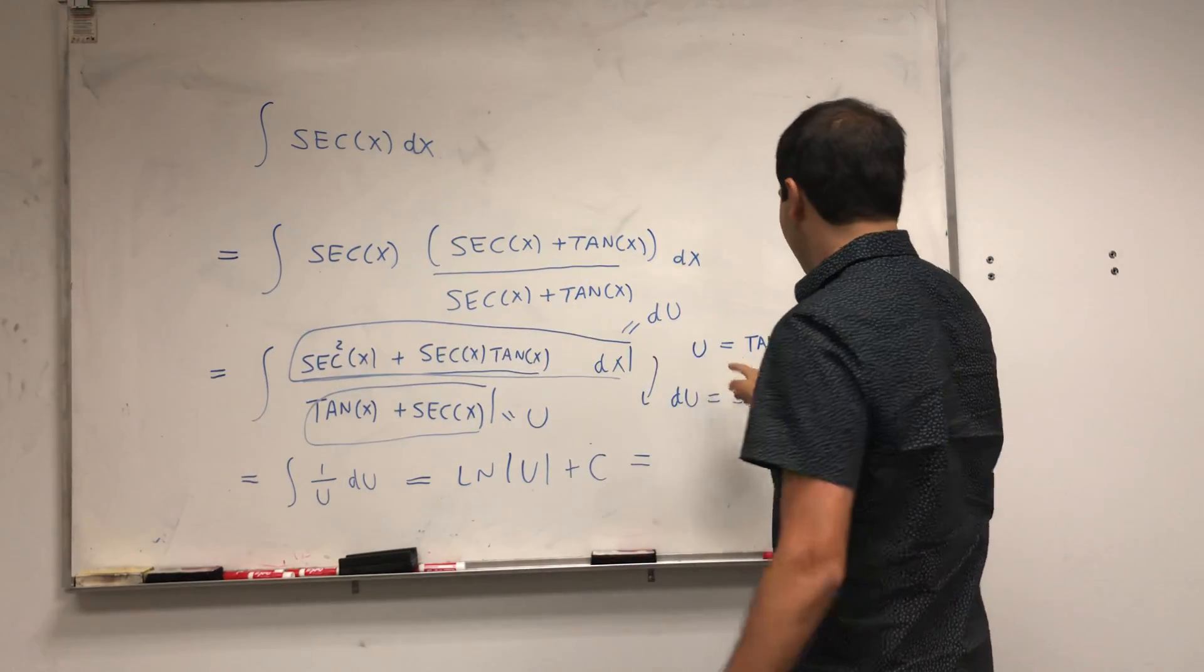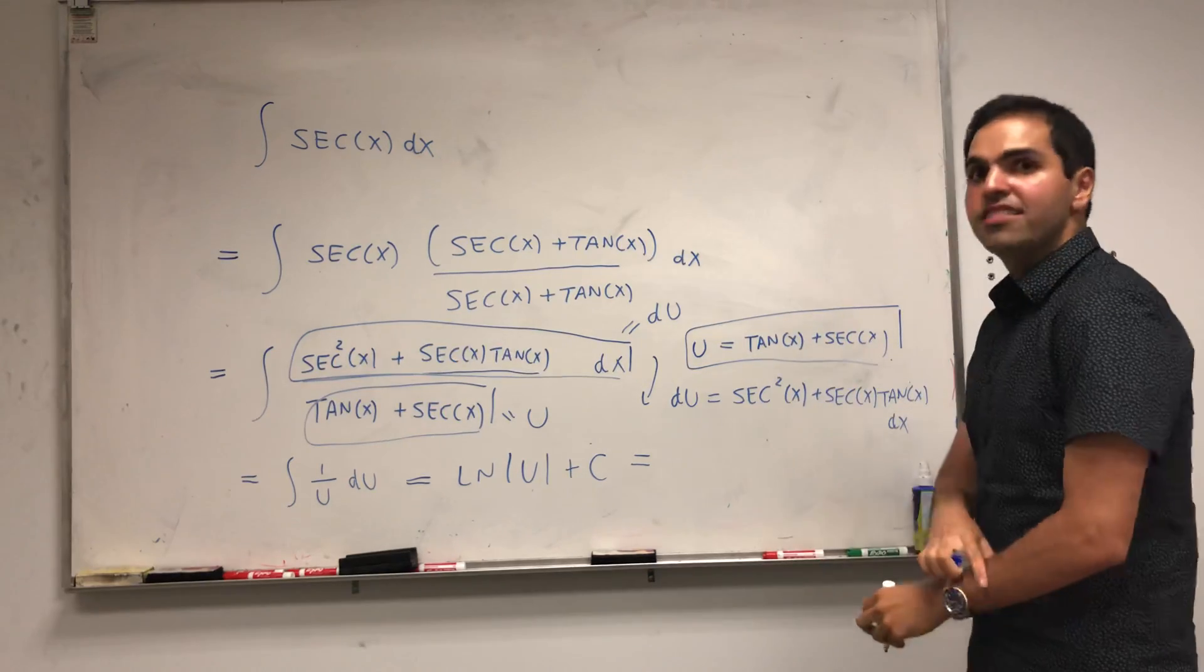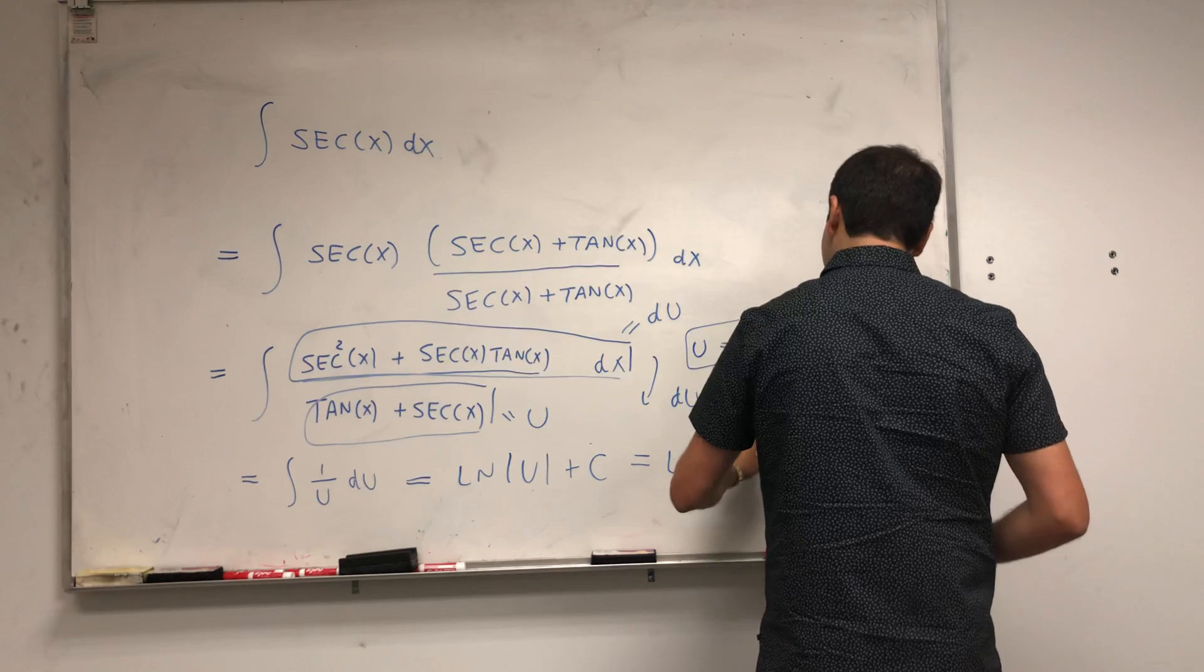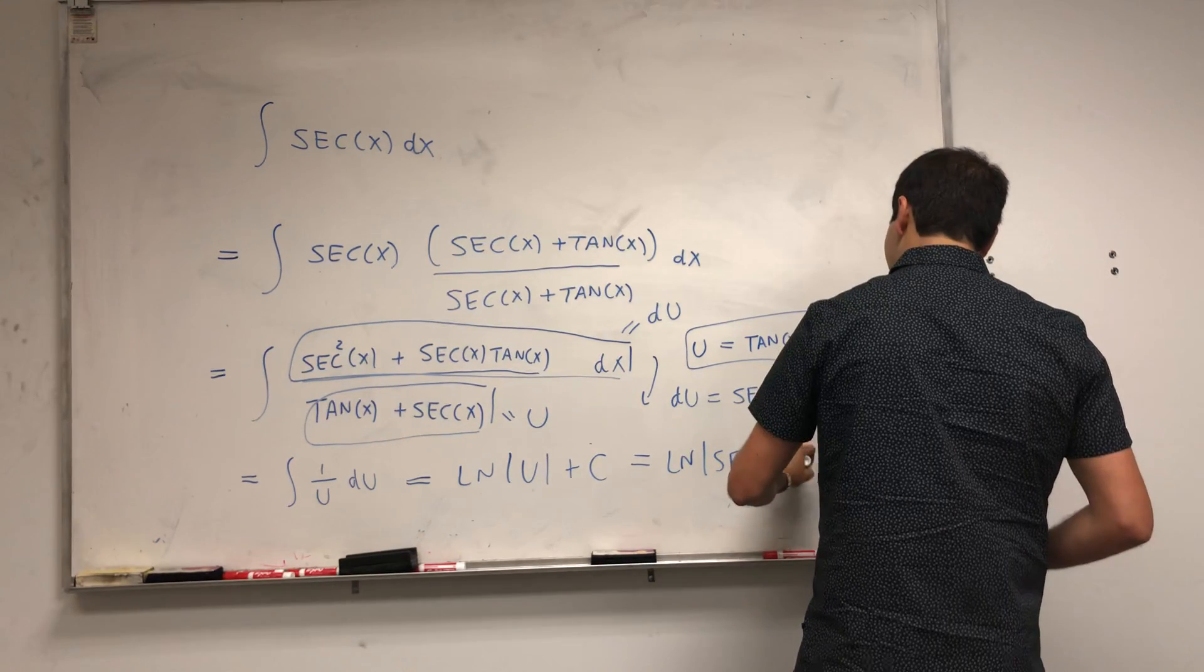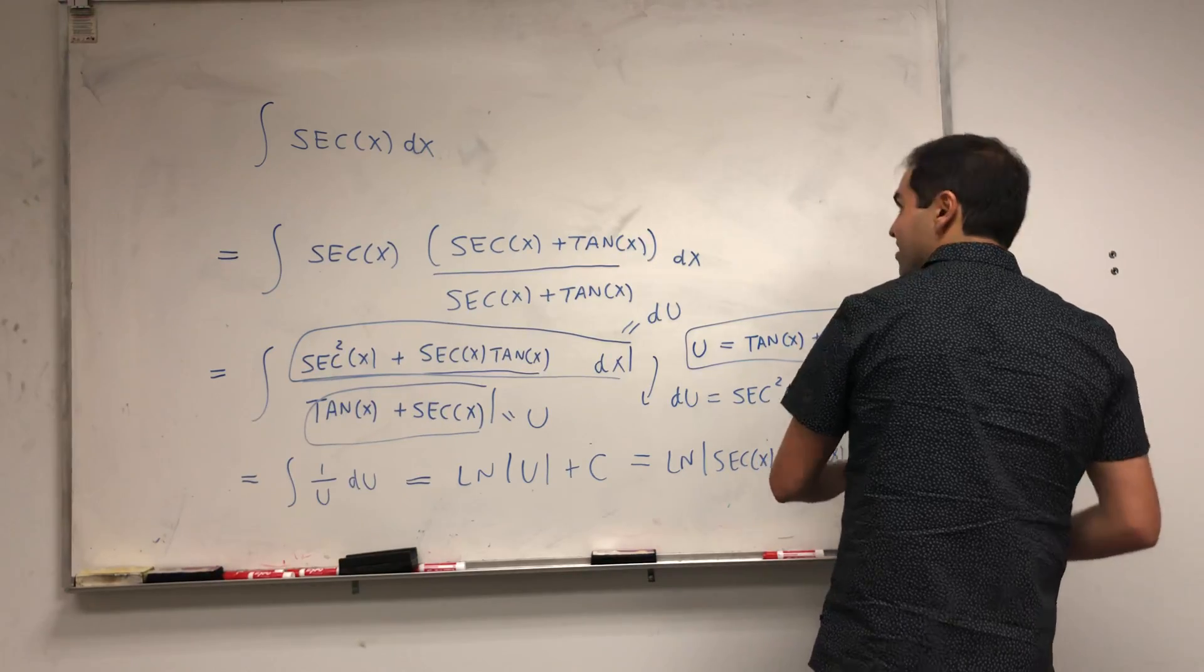But u, remember, that's tangent plus secant. Or you can write it as secant plus tangent. And you're left with ln of secant of x plus tangent of x, absolute value, plus a constant.